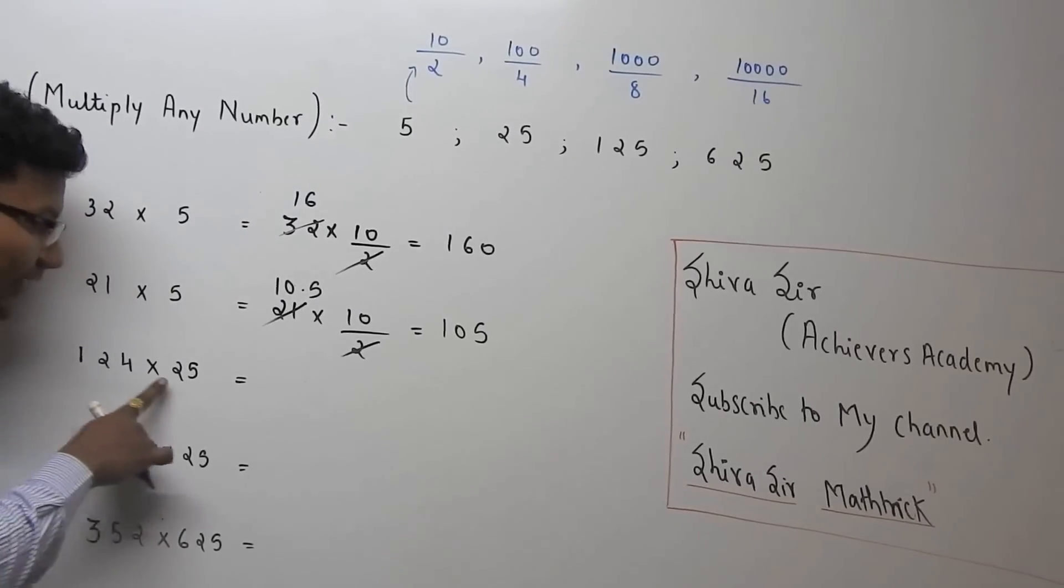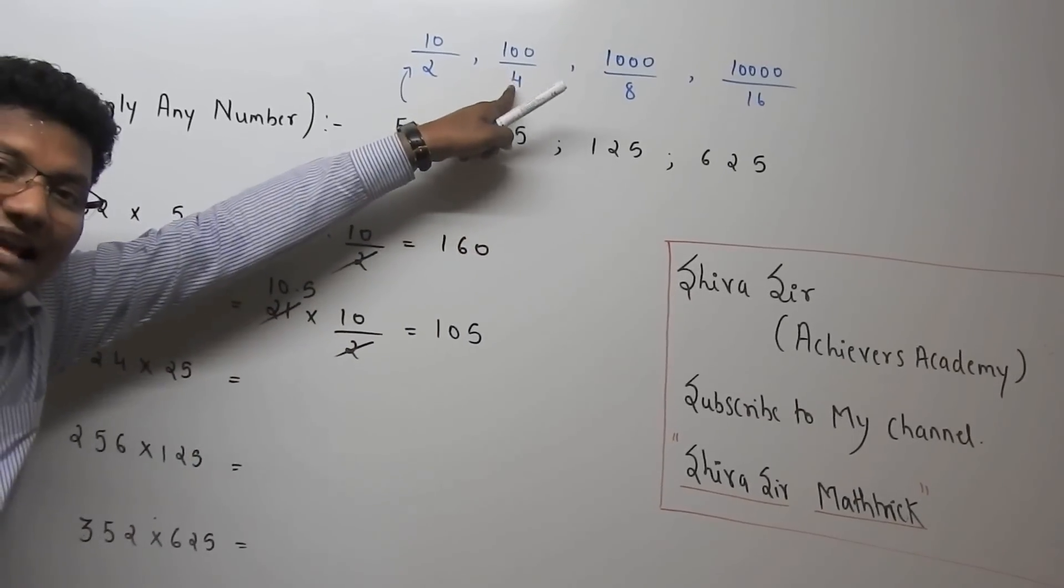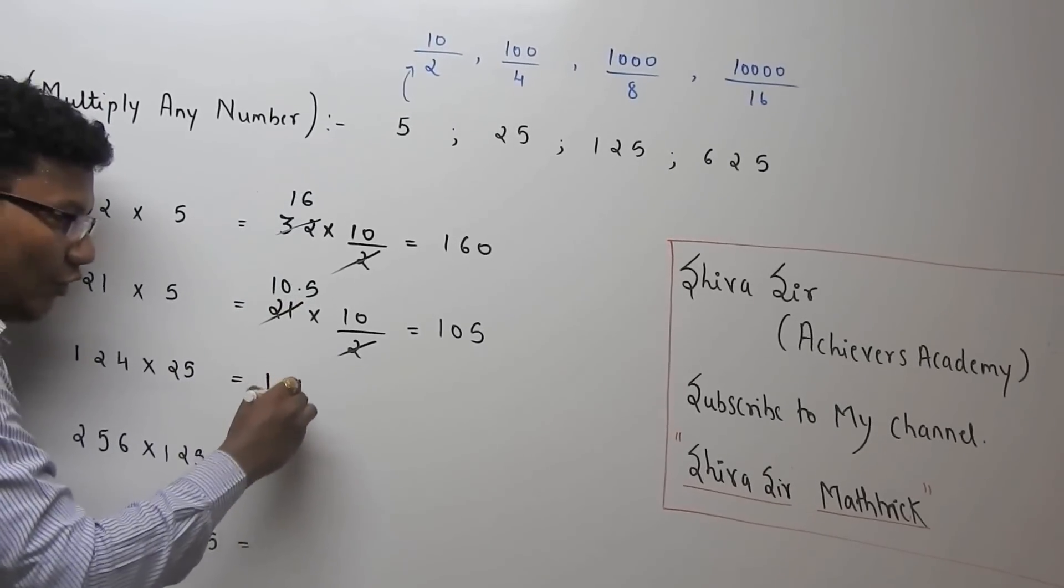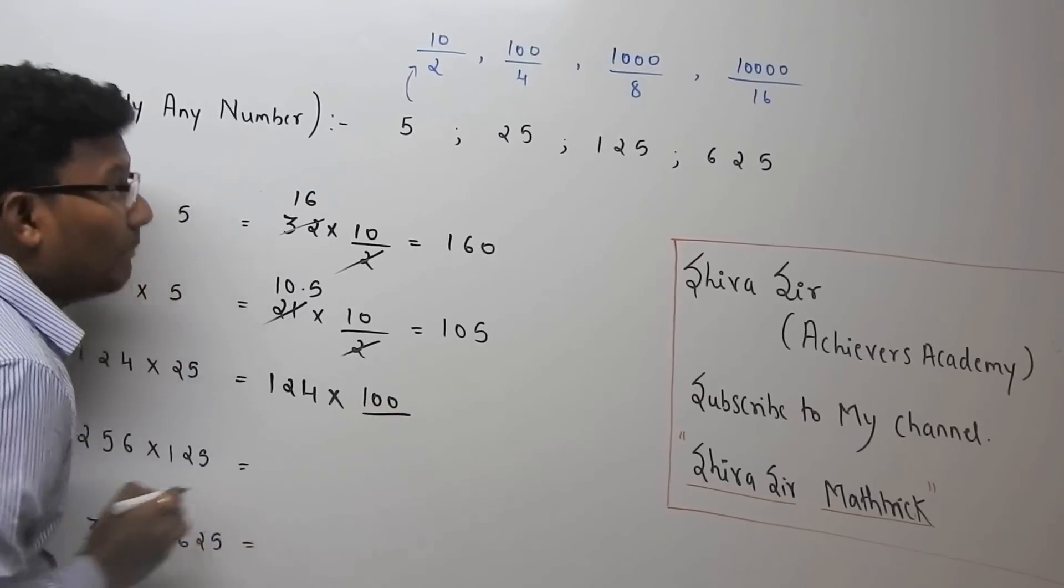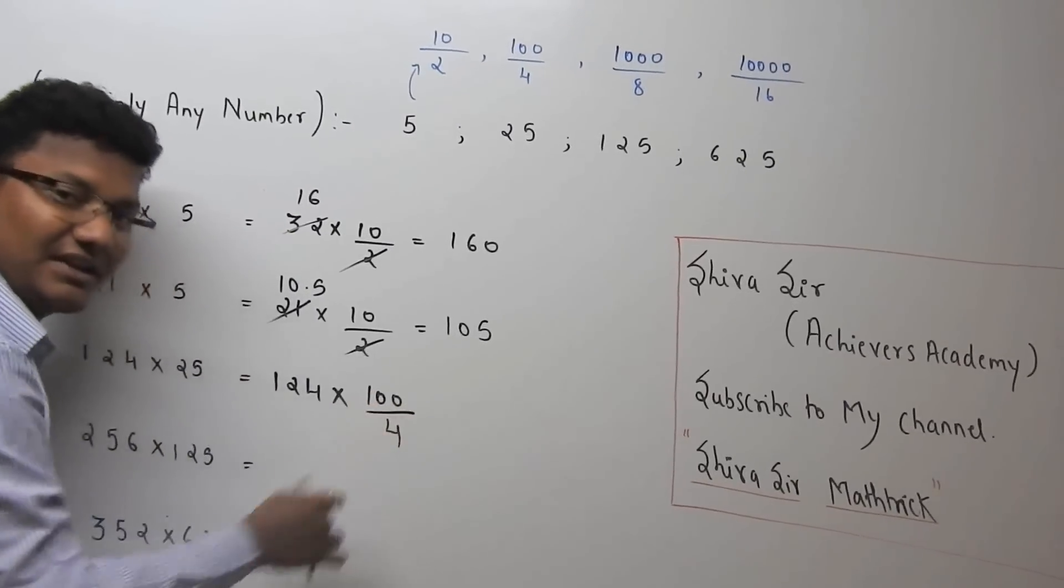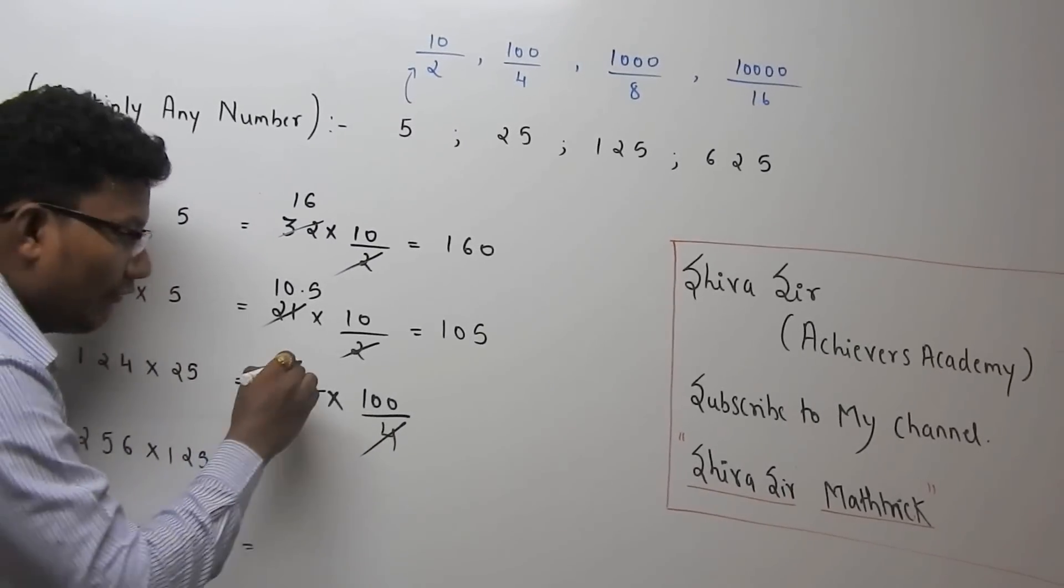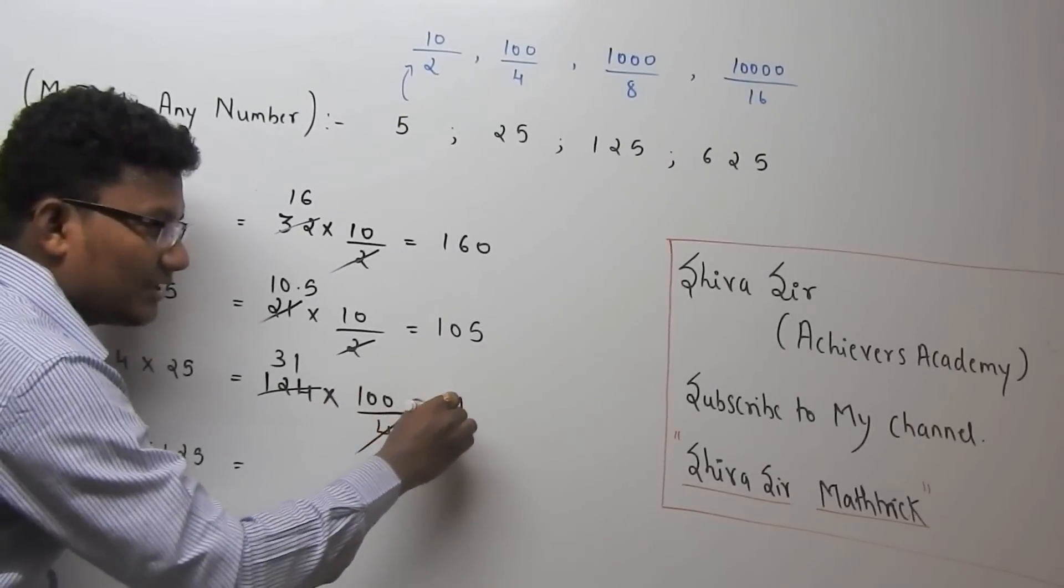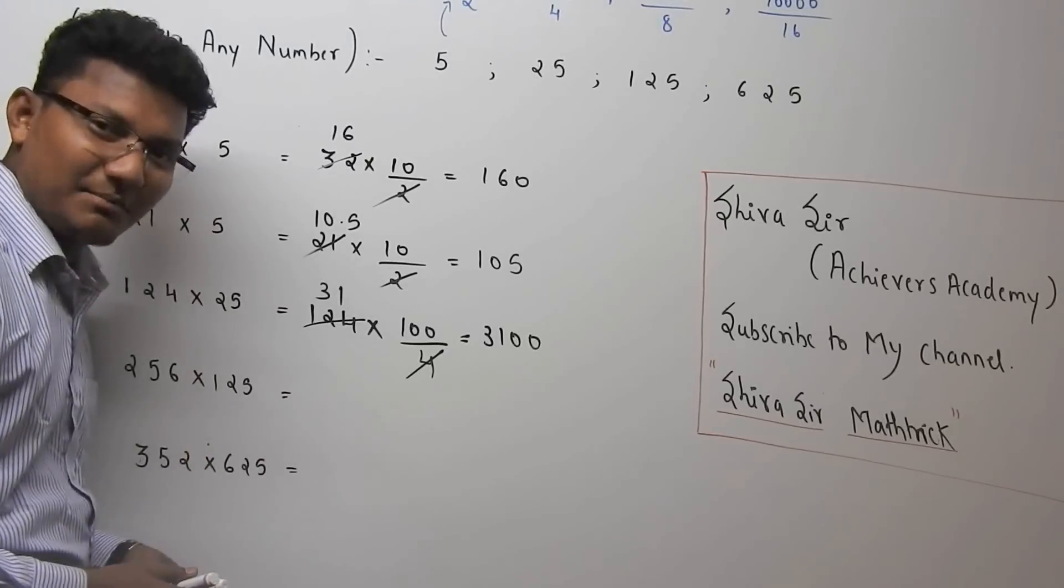Now move on to the next. 124 into 25. As we know, 25 can be written as 100 by 4 to make the calculation easier and faster. So 124, keep as it is, 25 can be written as 100 by 4. Cancel out. Multiply by 100. 4 into 124 is 31. So 31 times 100 is 3100.